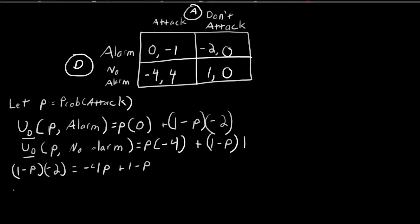For P to be a Nash equilibrium, these two expected utility terms need to be equal, so we set them equal and solve for P. We find that when P is equal to 3 over 7 — when the attacker randomizes with probability 3/7 — the defender is indifferent between sounding an alarm and not sounding an alarm.